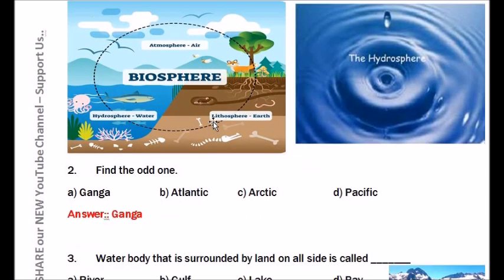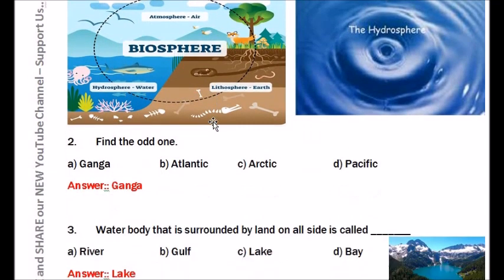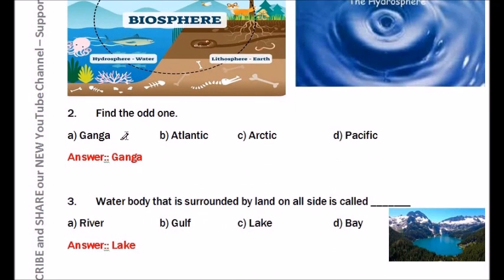Question number two: Find the odd one out. Options are: Ganga, Atlantic, Arctic, Pacific. The answer is Ganga, because that is a river. The other three are all oceans.